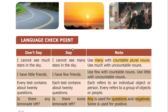Language checkpoint. Use many with countable plural nouns; use much with uncountable nouns. For example: I cannot see much stars — stars is countable, so the correct sentence is: I cannot see many stars in the sky.